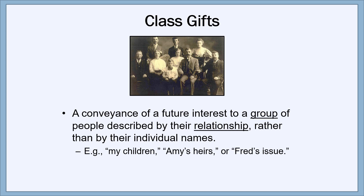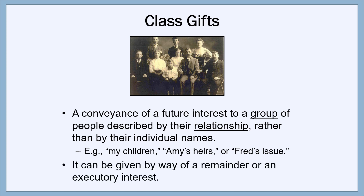These are all classes of people described by their relationship rather than by name. If we said 'to my children, John and Mary,' even though there are two of them and therefore they're a group, that wouldn't be a class gift because we've given their names. A class gift can be given either by way of a remainder or an executory interest — either will work.